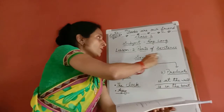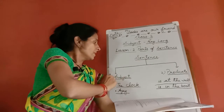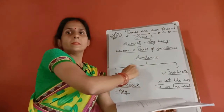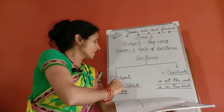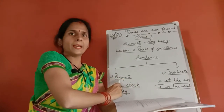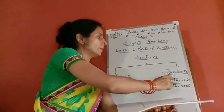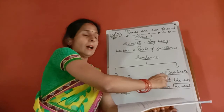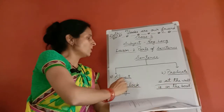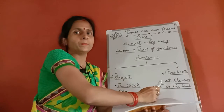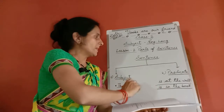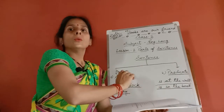Parts of sentence. There are two parts in a sentence: number one is the subject, and number two is the predicate. Now we will learn how to identify the subject and the predicate.